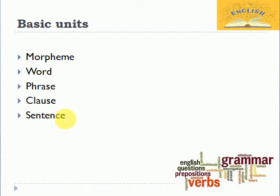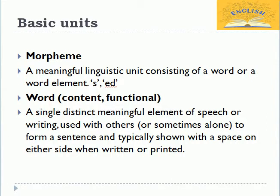Our focus is upon the sentence, but before moving towards the larger unit I would like to give you a very brief introduction of these units. The morpheme is the smallest unit in English grammar — in any grammar — and it is a meaningful linguistic unit consisting of a word or a word element.